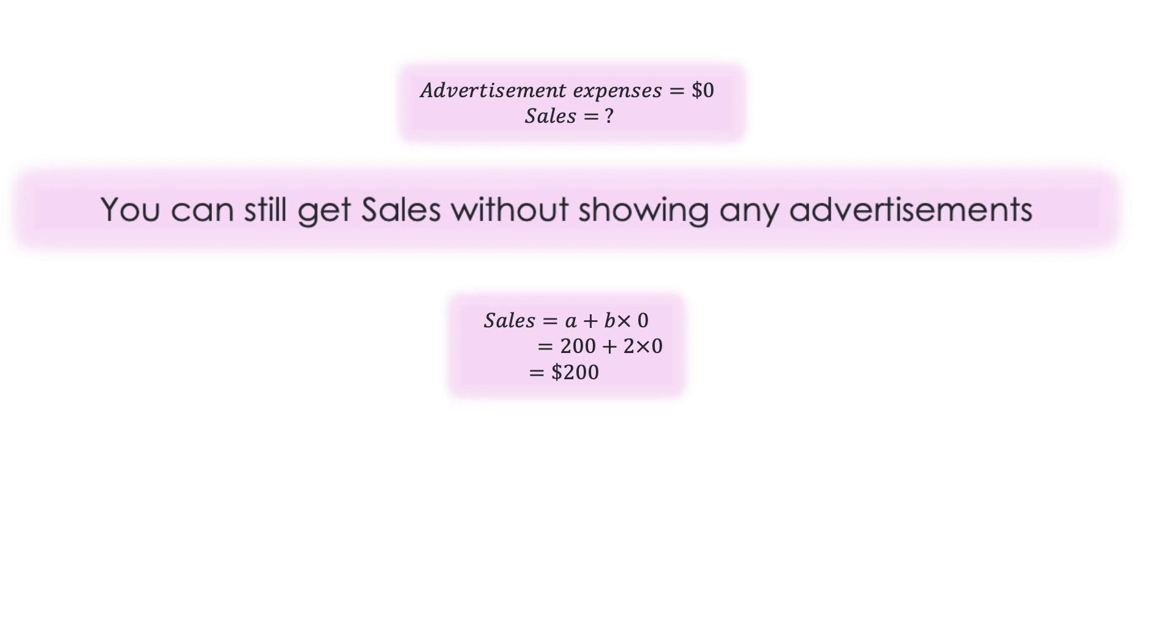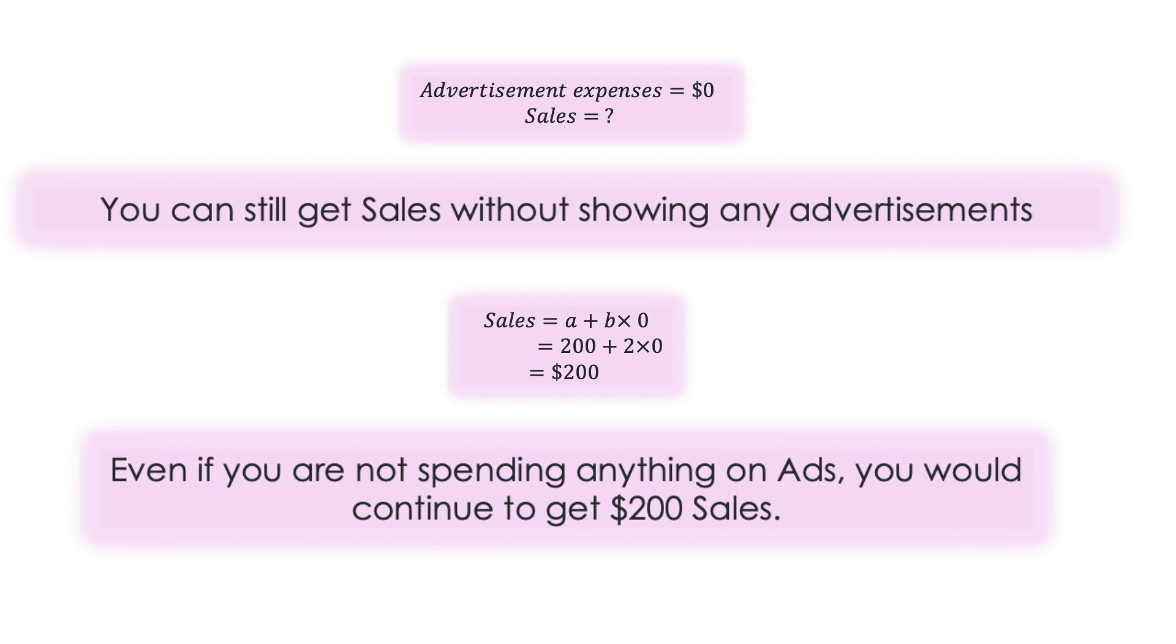Now let's look at one more interesting scenario. What if you do not spend at all in advertisements? Would you not get any sales? The answer is no. You can still get sales without showing any ads, right? But then how does this equation work in that scenario? So let's try that. Here advertisement dollars is zero, then sales would be a plus b times zero, means sales is 200.